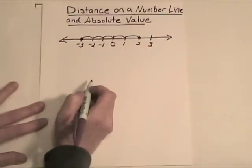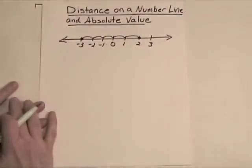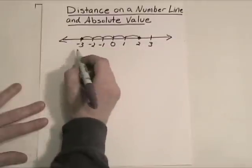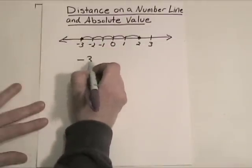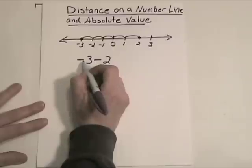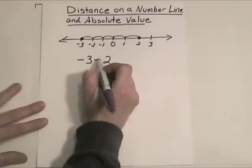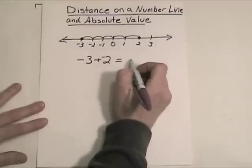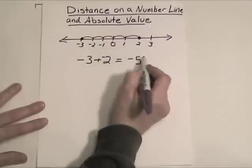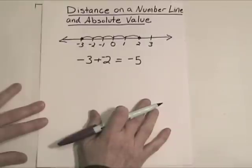Remember back from elementary school, if you ever want to find out how far apart two numbers are from one another, you just subtract them. So let's see what happens when we subtract. If we take negative 3 minus 2, that would be the same thing as negative 3 plus the opposite of 2, which is negative 5. But we just said they're five units apart and I'm ending up with a negative answer here.